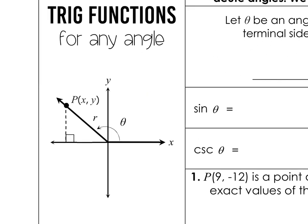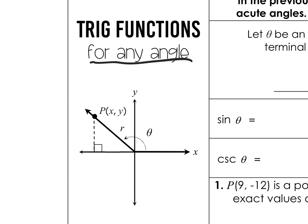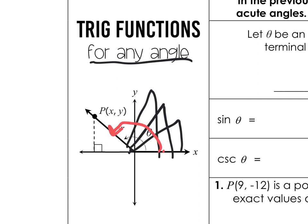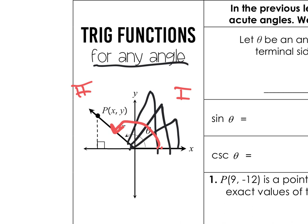We're going to talk about trig functions for any angle. On the xy-plane, all the triangles you've been dealing with have been acute angles — it didn't matter how big the angle was, but you were only dealing with positive sides of the triangle. But what if we open the angle all the way out into quadrant two? Most of yours have been in quadrant one. If your angle opens up far, we care about this smaller angle — that's called a reference angle.